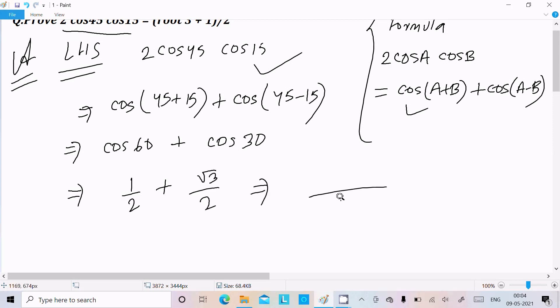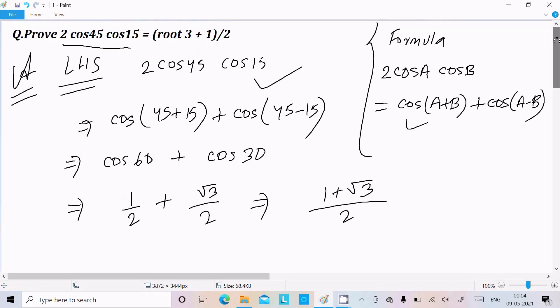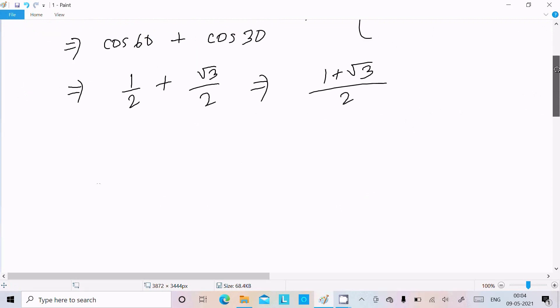Now here, 2 is the LCM. 1 plus root 3, or here root 3 is first, so we can write root 3 plus 1 by 2.